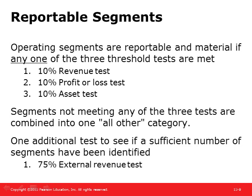GAAP does not specify the number of segments that must be reported. However, too many segments would be considered overly detailed and therefore counterproductive. Although no firm limit was established, the standard encourages enterprises that identify 10 or more reportable segments to consider additional aggregation of their segments.